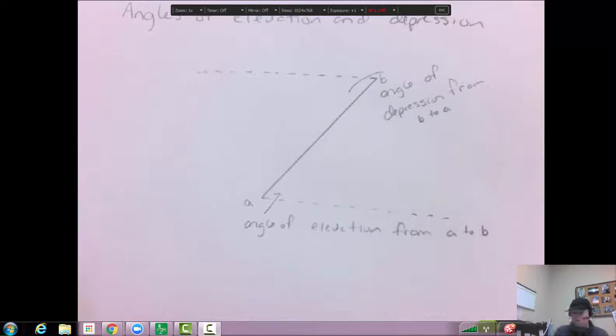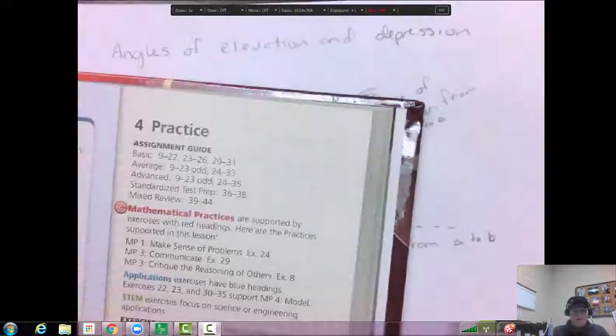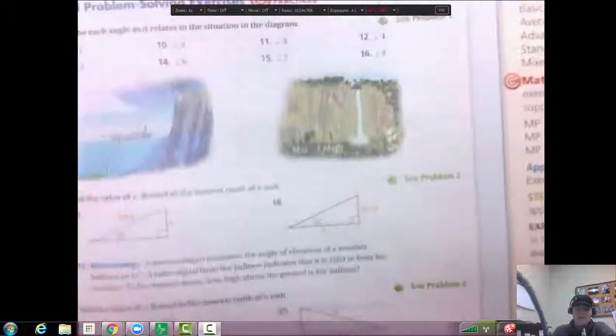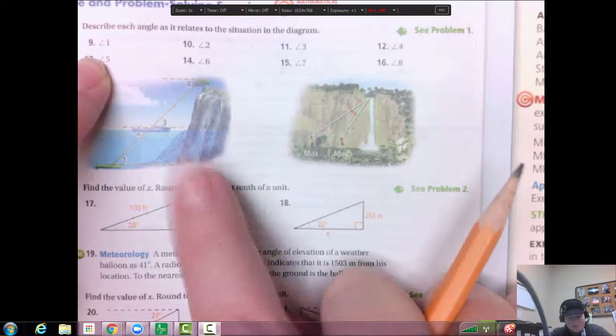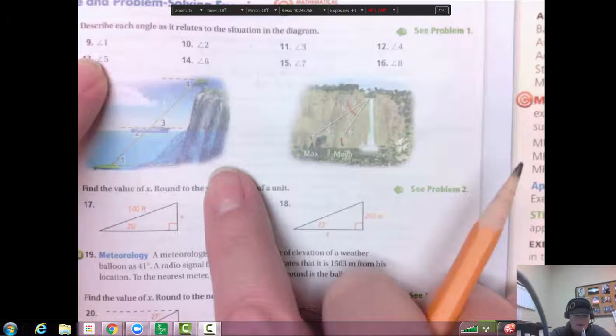So I'm just going to show you some examples that the book has because they have pretty pictures, and it's easier to put my camera on it than me draw them. Okay, so this might be similar to some of the problems you're going to see in the homework. Okay, so let's look at this picture first, and we'll look at problem nine. Nine says describe each angle as it relates to the situation in the diagram.